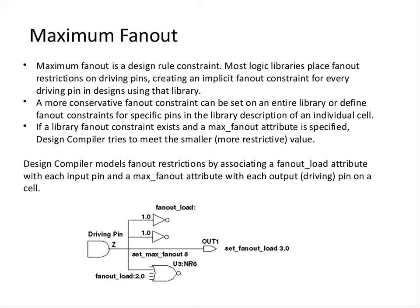The second design rule constraint is maximum fanout. Maximum fanout is also a design rule constraint and most logic libraries have a fanout system creating an implicit fanout constraint. Usually the maximum fanout has two sides. This constraint is similar to max_trans in that if you apply a more restrictive value using an explicit command, DC will try to meet the more restrictive one, and the limit cannot be relaxed.